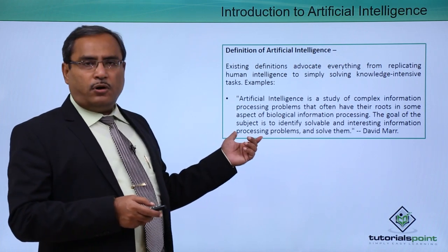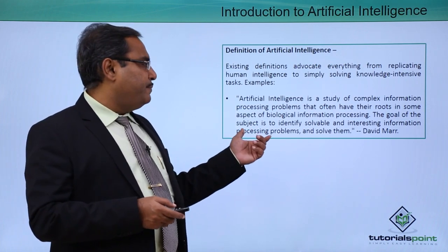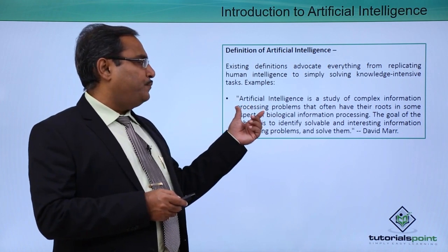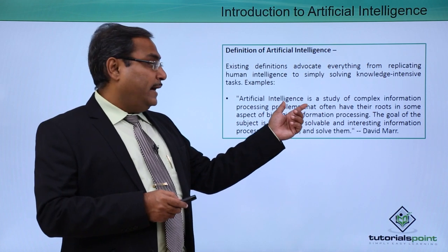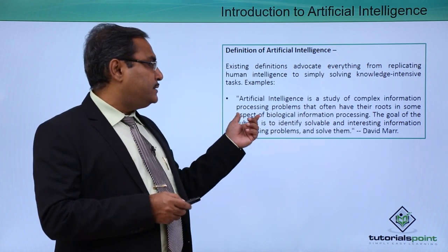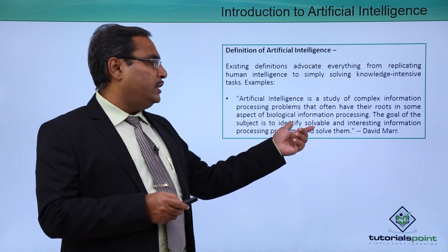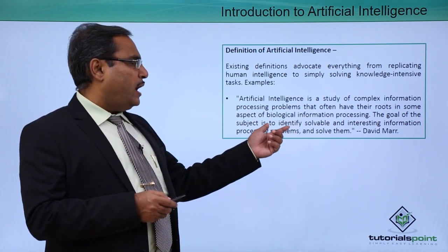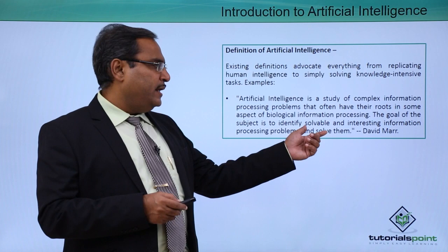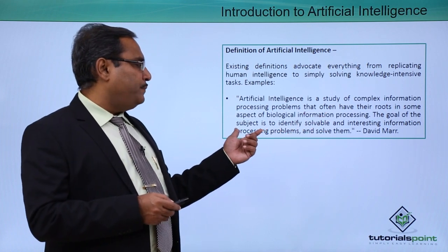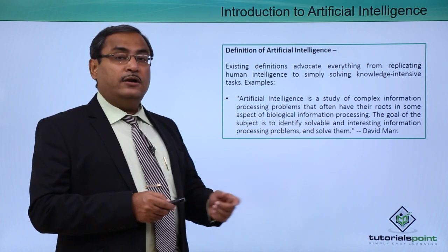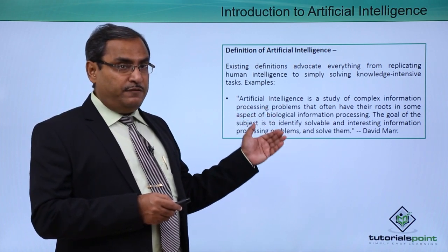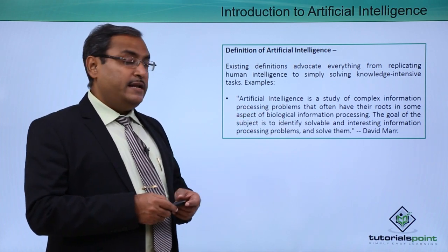Let us go for the quote from David Marr. Artificial intelligence is a study of complex information processing problems that often have their roots in some aspect of biological information processing. The goal of the subject is to identify solvable and interesting information processing problems and to solve them. This definition has been quoted by David Marr.